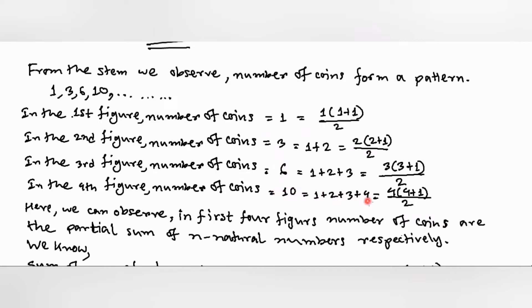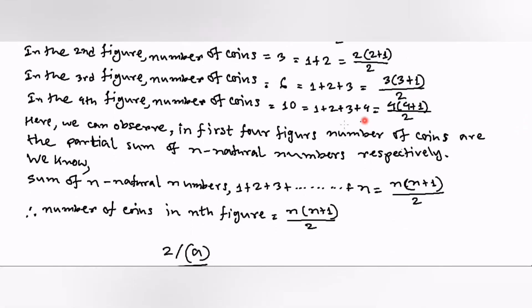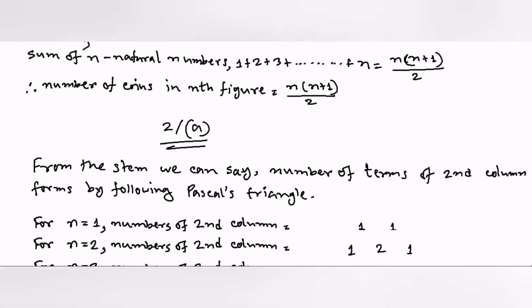For the fourth figure it is 4(4+1), for the third figure it is 3(3+1), for the second figure it is 2(2+1), and for the first figure it is 1(1+1). Every time n is increasing. So for the nth figure, n natural numbers are present, and the summation from 1 up to n terms — that is 1+2+3+...+n — equals n(n+1)/2. That was the end of question number 1.